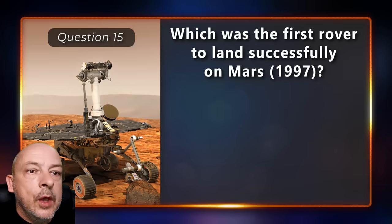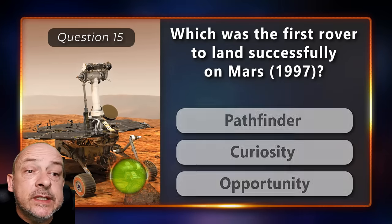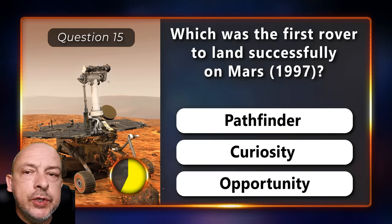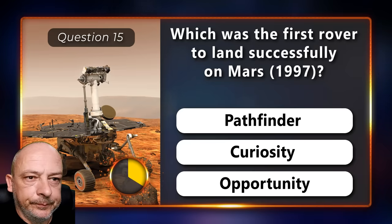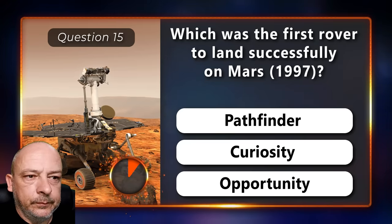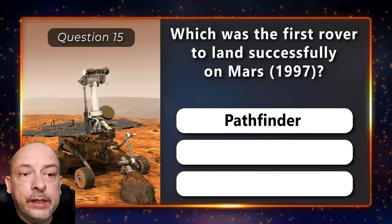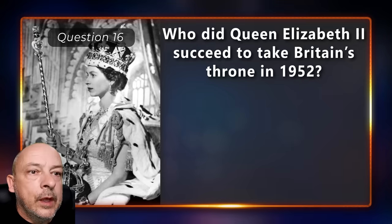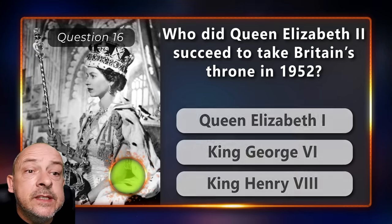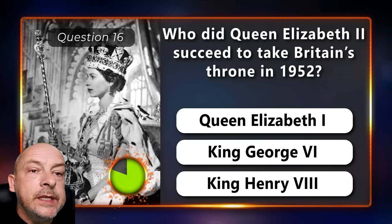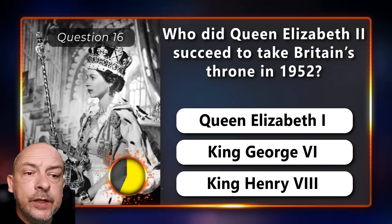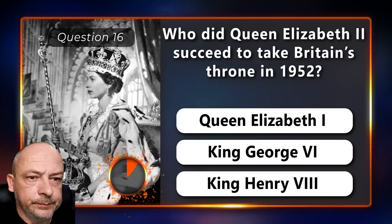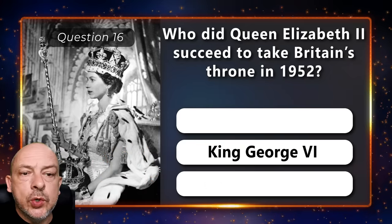Which was the first rover to land successfully on Mars — Pathfinder, Curiosity, or Opportunity Rover? The correct answer is Pathfinder. Who did Queen Elizabeth the Second succeed to take Britain's throne in 1952 — Queen Elizabeth the First, King George the Sixth, or King Henry the Eighth? King George the Sixth.